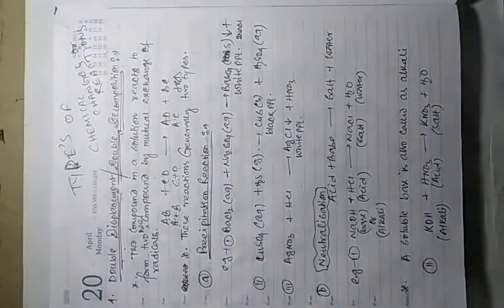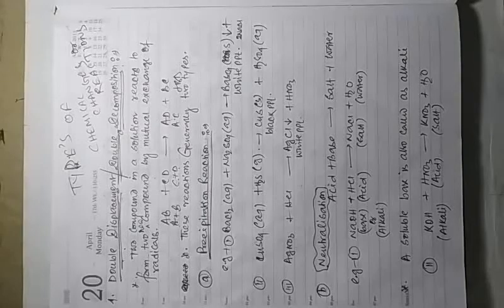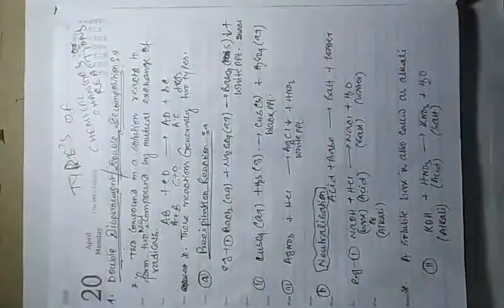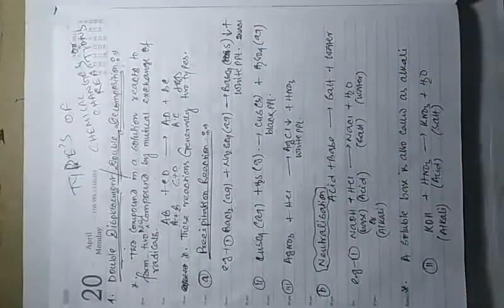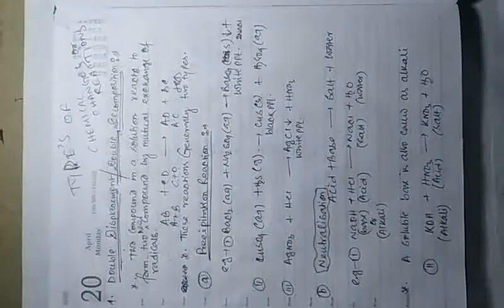They react together, exchange themselves, and undergo a reaction — that is a double displacement reaction. These reactions are generally of two types: one is precipitation and another is neutralization. Some other normal reactions are also categorized as double decomposition reactions.